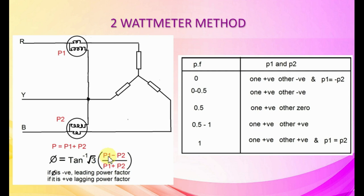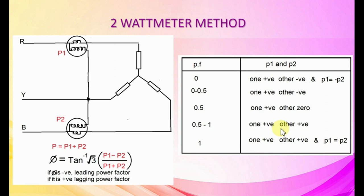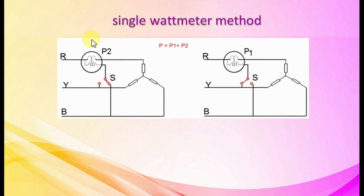In the two-watt-meter method: if phi is negative, power factor is leading; otherwise it is lagging. If P1 equals minus P2, power factor is zero. If one reading is positive and the other negative, power factor is 0 to 0.5. If one is positive and the other zero, power factor is 0.5. If both are positive, power factor is 0.5 to 1. If both positive and equal, power factor is 1. In the single watt meter method, a switch is used; when connected to B phase, watt meter reading is P2.